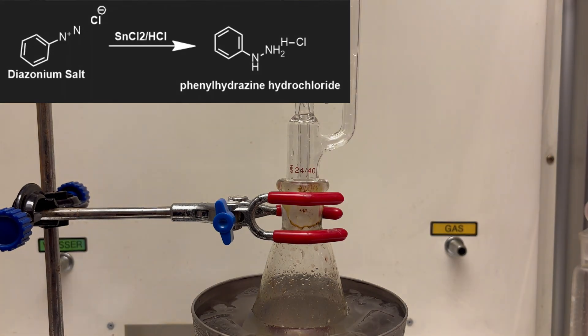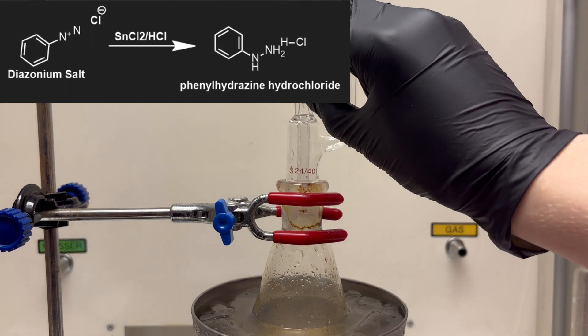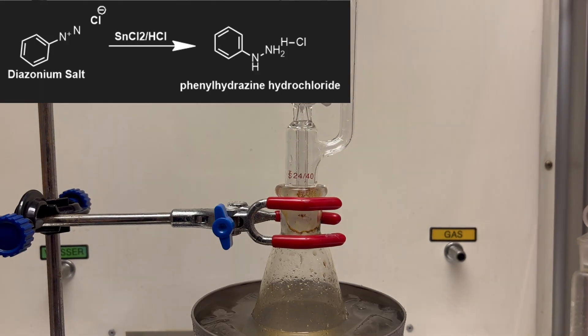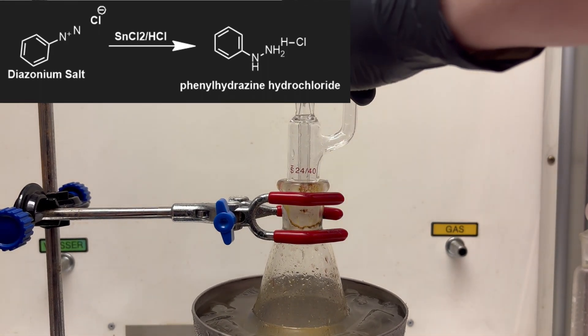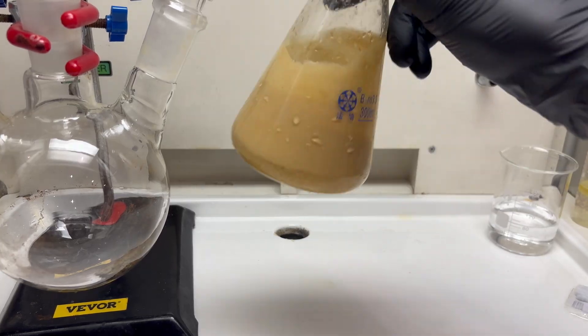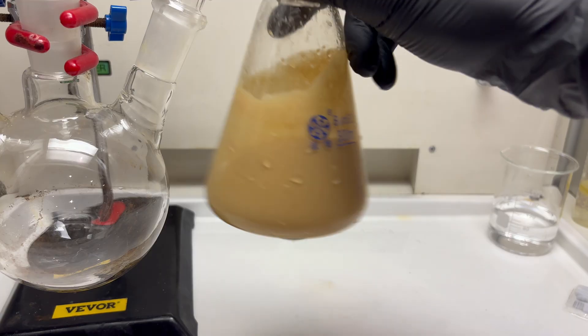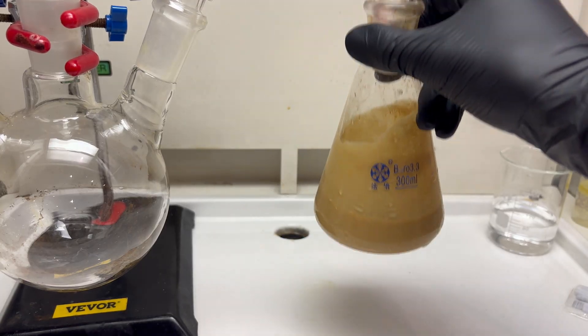The stannous chloride solution reacts with the diazonium salt of aniline to form the insoluble phenylhydrazine hydrochloride. After this reaction, I shake the flask a bit and you can see the insoluble phenylhydrazine hydrochloride.